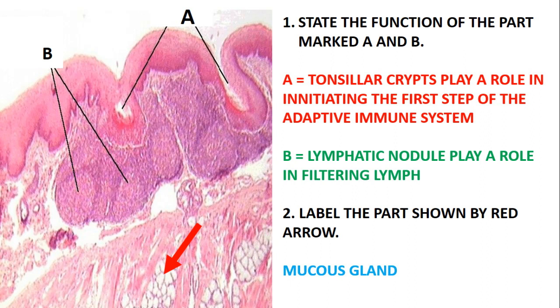Part A — tonsillar crypts — plays a role in initiating the first step of the adaptive immune system. Part B — lymphatic nodules — plays a role in filtering lymph. One thing to understand: the spleen filters blood, the lymph nodules filter lymph, and the thymus is where maturation of T cells takes place. Thank you very much for joining me. This was Dr. from Excel Academy — please subscribe to my YouTube channel and contact me with any questions.